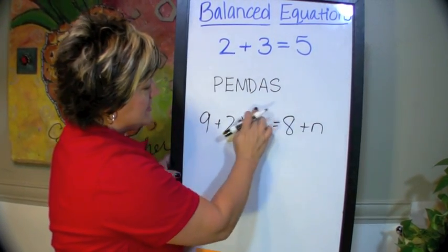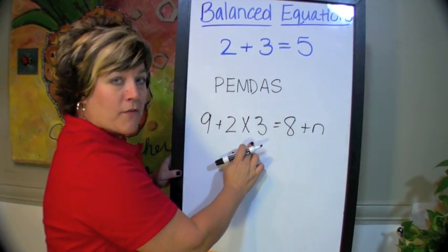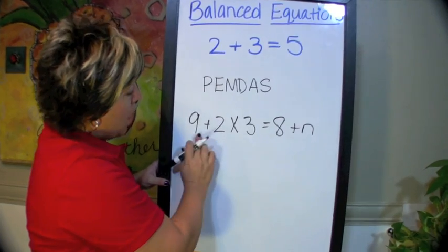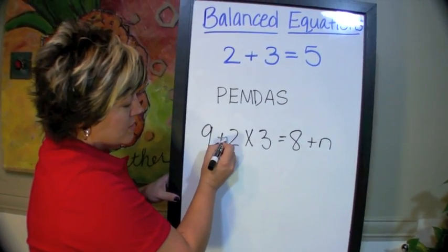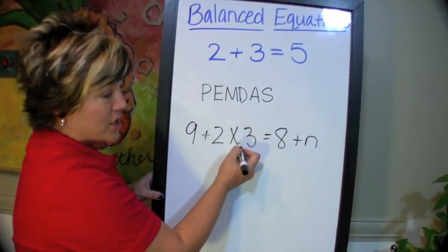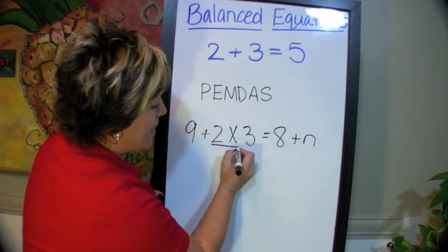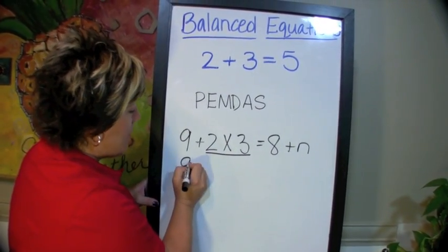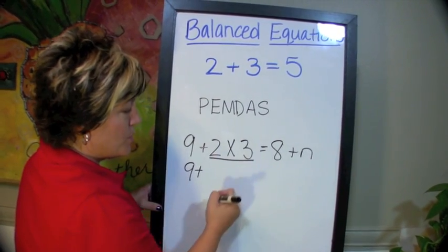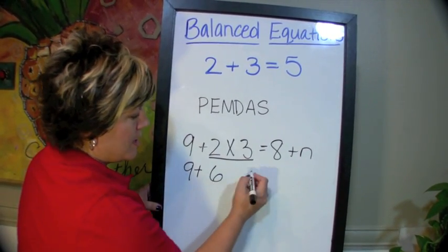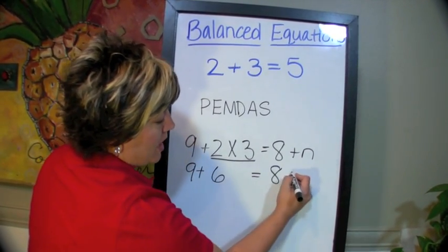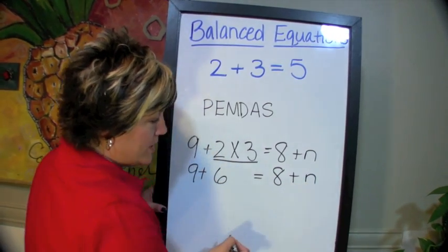So we'll take care of this side of the equation first and solve for the value of this expression. I'm looking here and I see I have an addition and I also have multiplication. If I look up here, multiplication comes before addition. So I'm taking care of this part first. I'm not using the 9 or the addition this time. So 2 times 3 is 6. I'm going to go ahead and write the other side of my equation.